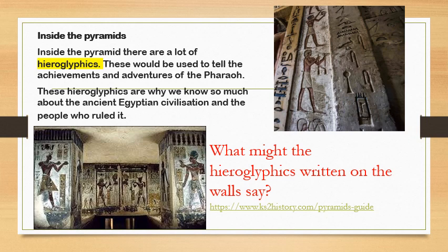These two pictures I've put on here were from the inside of a pyramid. These images are hieroglyphics, which was writing in ancient Egypt. These would be used to tell the achievements and adventures of Pharaohs, and the hieroglyphics are why we know so much about ancient civilisation. So what might the hieroglyphics written on the walls say, if it's about achievements and adventures of Pharaohs? And why are they written inside the pyramids?